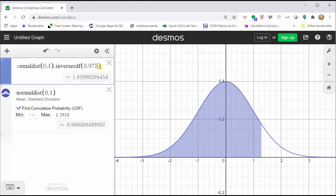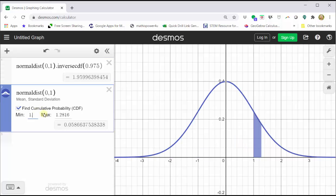Again, let's verify. The area to the right is 0.025 by changing the minimum in cell two to 1.9600 and clear the maximum. Notice that we do get approximately 0.025.